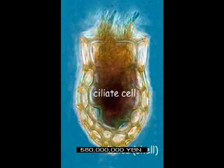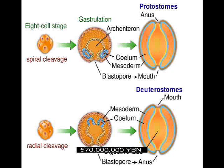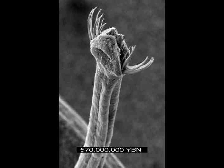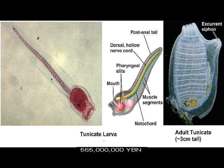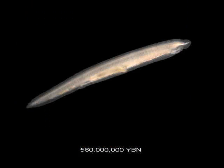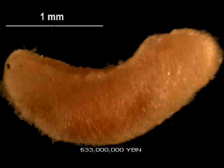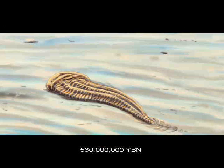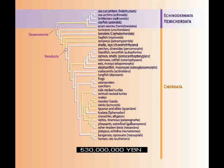First shell or skeleton. Deuterostomes — ancestor of acorn worms, starfish, and all chordates. Earliest teeth. Animals start to eat other animals. Chordates — ancestor of all tunicates, fish, amphibians, reptiles, mammals, and birds. Tunicates. First fish. Segmentation. Heart. Mollusks. Arthropods. Crustaceans. Insects. Vertebrates — ancestor of most fish and all amphibians, reptiles, mammals, and birds.